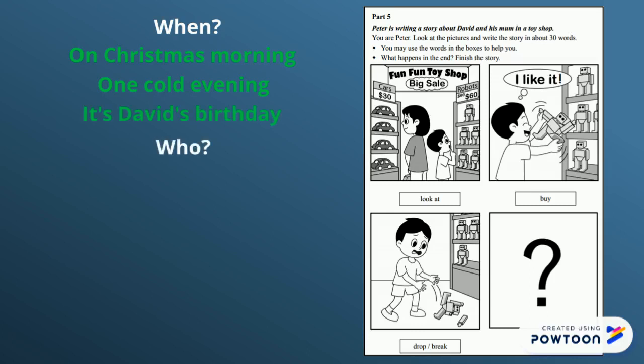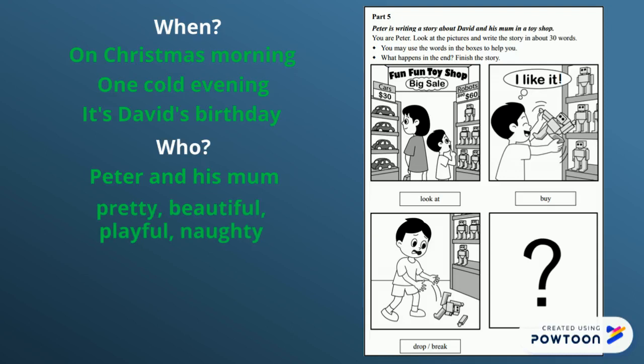Who do you see in the pictures? Peter and his mum? Yes. But we can also describe them by saying his mum is pretty or beautiful. Or maybe David is playful or naughty.